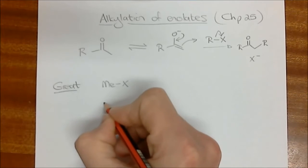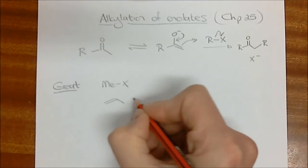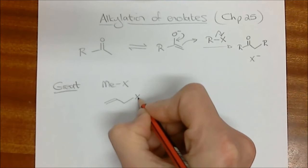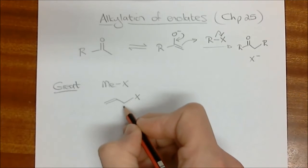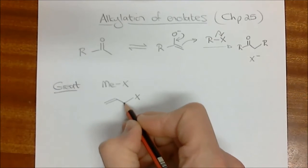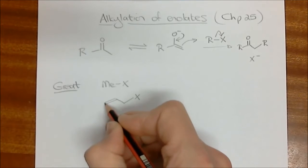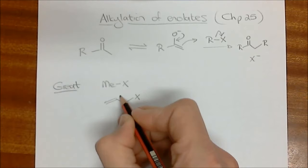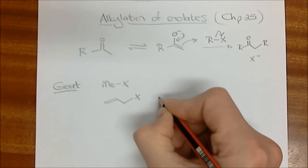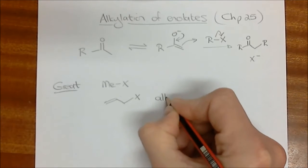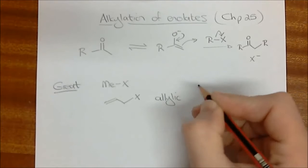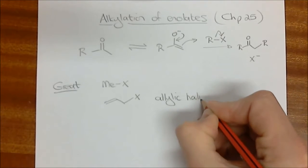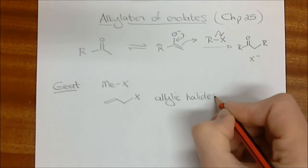And then the compounds that have a leaving group in the allylic position, in other words, the leaving group is on the position next door to a double bond. These two positions here are vinylic positions, and this is the allylic position. So allylic halides are excellent.